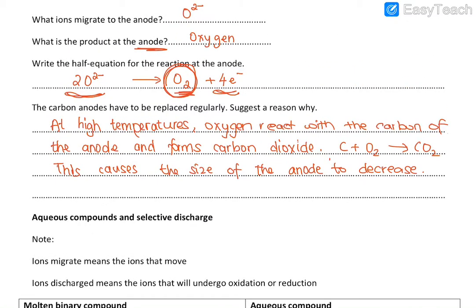When you have more than one cation and more than one anion in a solution, you have selective discharge. So the next video, we're going to be looking at selective discharge of anions and cations.